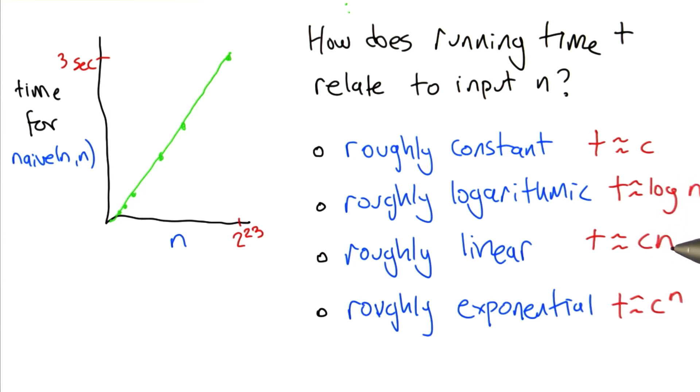Is it roughly linear? As n gets bigger, the time grows like c times n for some constant c. Or is it roughly exponential, where the time grows like c to the n for some value of c?